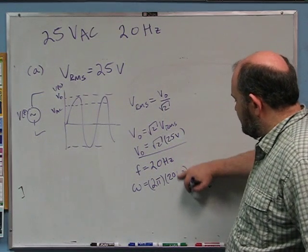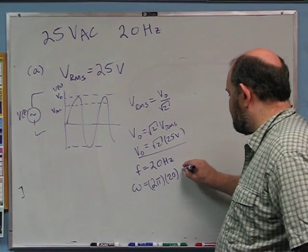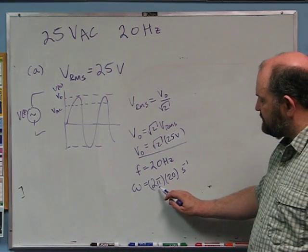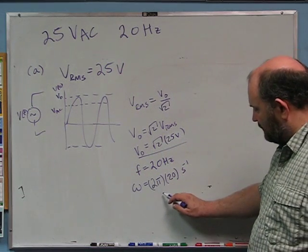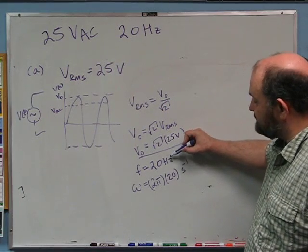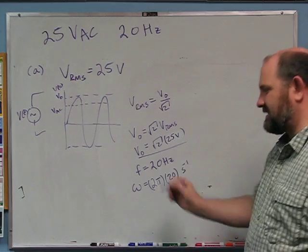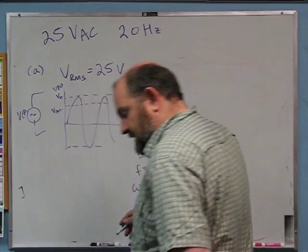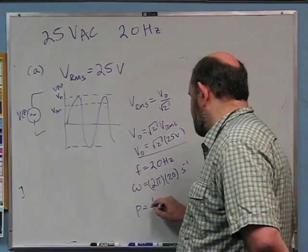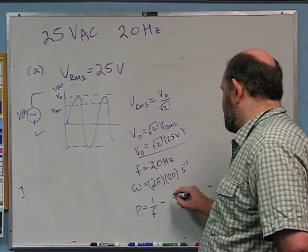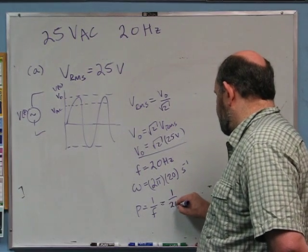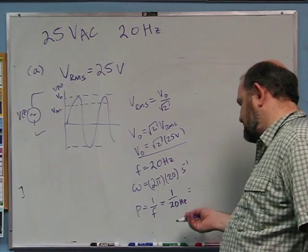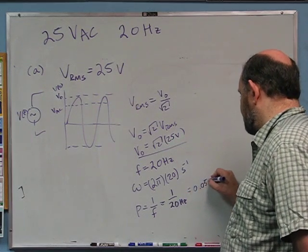Angular frequency is 2π times 20, and we usually write it as seconds to the minus one — really radians per second. You can think of this as a unit conversion: 2π radians per cycle, and the cycle cancels with cycles per second, leaving radians per second. For the period, T equals 1 over f, so that's 1/20th of a second, which is 0.05 seconds.